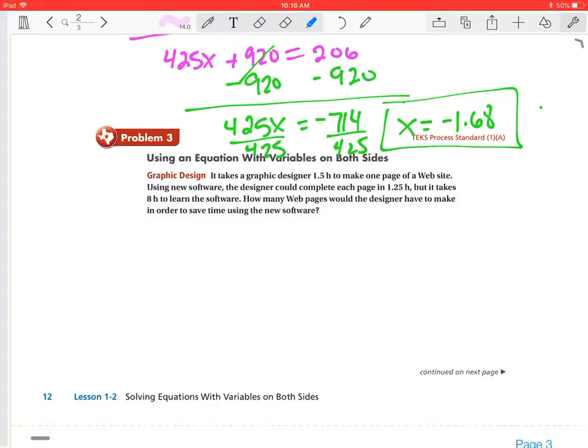It says that the graphic designer takes 1.5 hours to make one page of a website. Using new software, the designer can complete each page in 1.25 hours, but it takes eight hours to learn the software. How many web pages would the designer have to make in order to save time using the software?